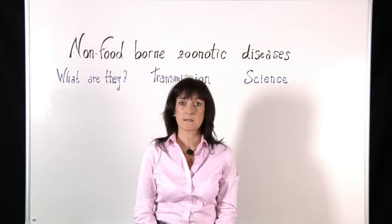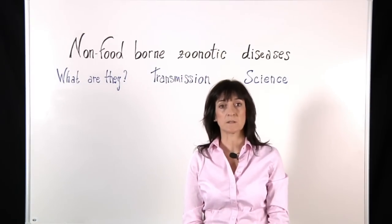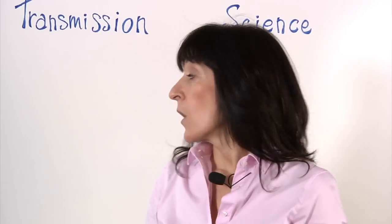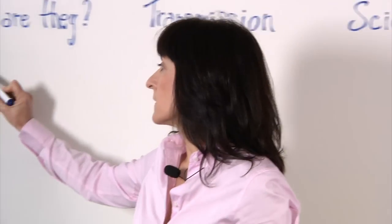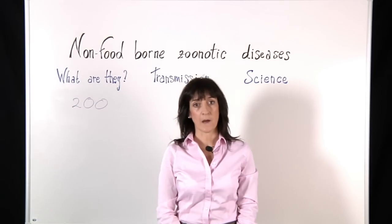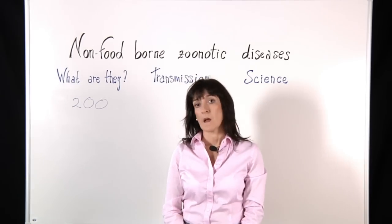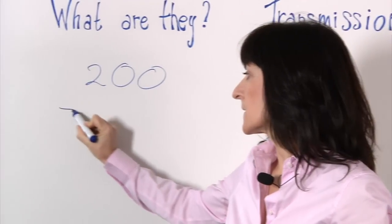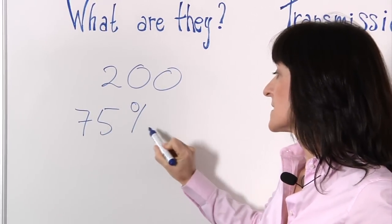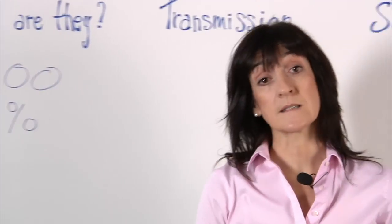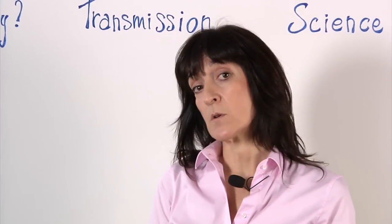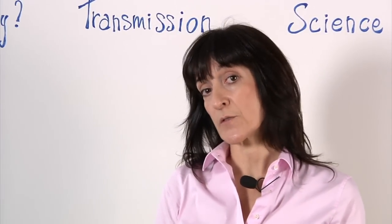A zoonosis is a disease that is naturally transmitted between animals and humans. There are 200 zoonotic diseases described. We think that 75% of the diseases that emerged in the last 10 years have their origin in animals or products of animal origin.